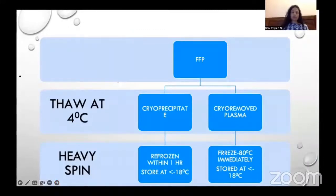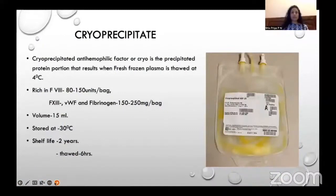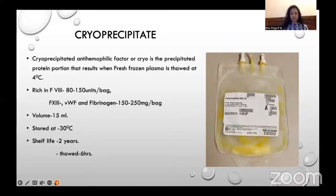When fresh frozen plasma is thawed at 4 degrees centigrade under heavy spin, it yields cryoprecipitate and cryopoor plasma. Cryoprecipitate is refrozen within one hour and stored at less than -18 degrees centigrade. Cryoprecipitated antihemophilic factor, or cryo, is a precipitated protein portion rich in factor 8, factor 13, von Willebrand factor, and fibrinogen. It contains around 80 to 150 units of factor 8 per bag and 150 to 250 mg of fibrinogen per bag. Volume is usually 15 ml. Stored at -30 degrees centigrade with a shelf life of 2 years; thawed cryoprecipitate has a shelf life of 6 hours.